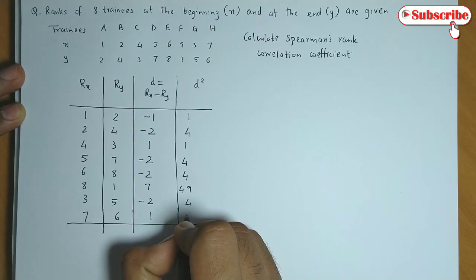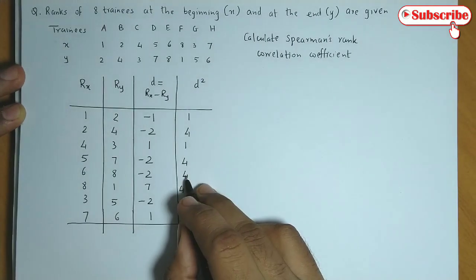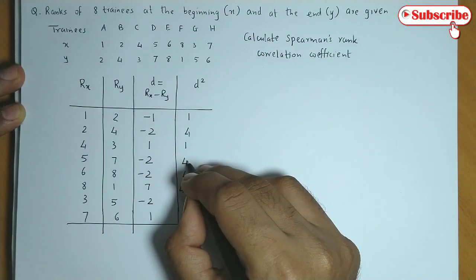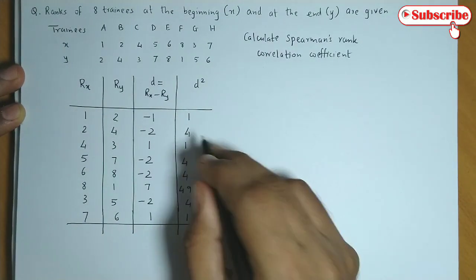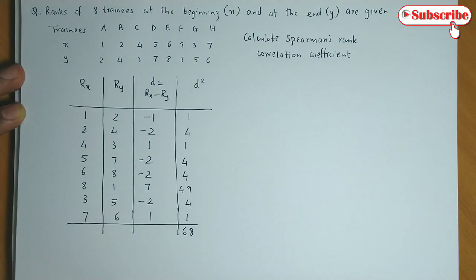4 and 1, 49, 50, 54, 58, 62, 63, 64 and 4. So we have summation d square as 68.